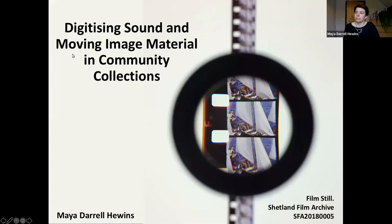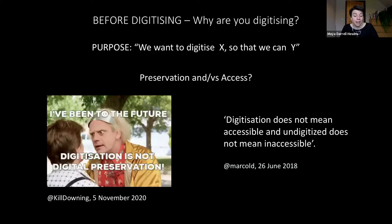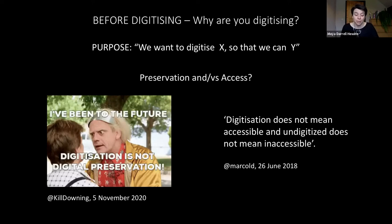Before doing anything, it's really important to think about why you're digitising your material. This will help you plan a project and give it purpose. Rather than saying we want to digitise things to make them accessible, be specific — for example, we want to digitise these two films about Lerwick sailing regattas so that we can screen them at the Boating Club's centenary celebration. Two things to remember: digitisation is not preservation in and of itself. Digital items require preservation to remain accessible, so digitisation is not the end of a process — it is the start of a process.